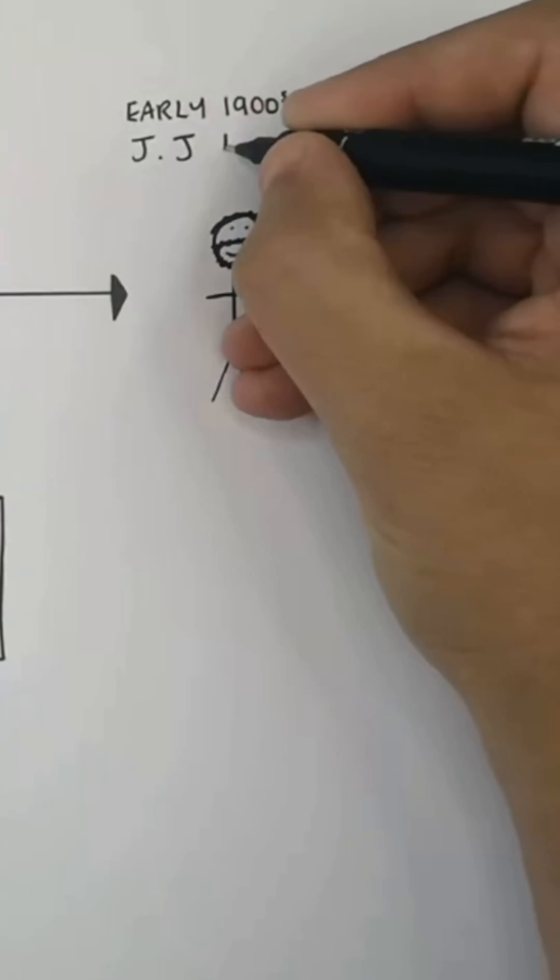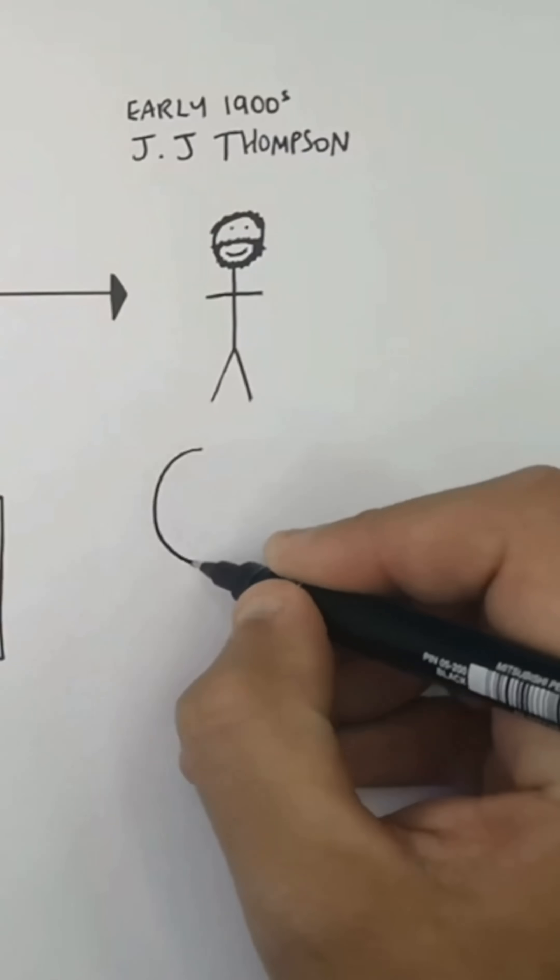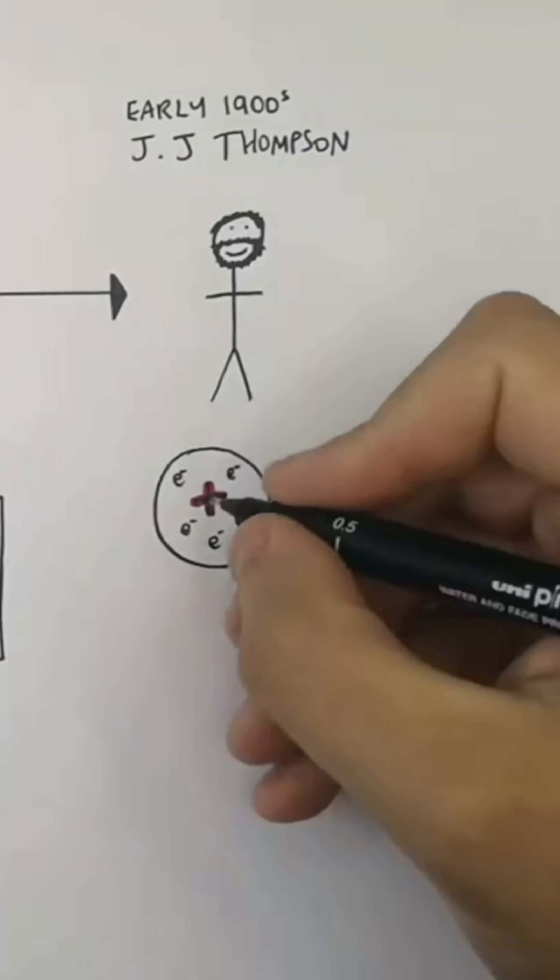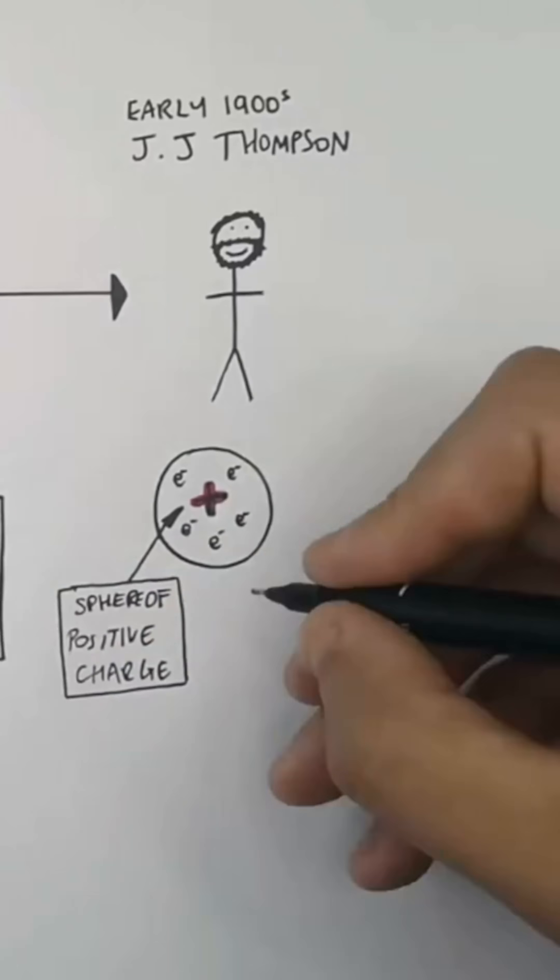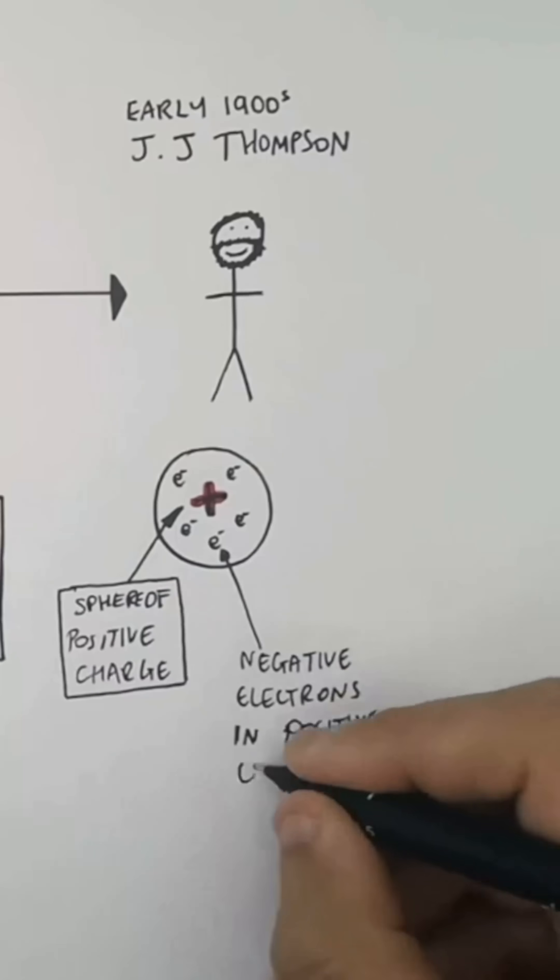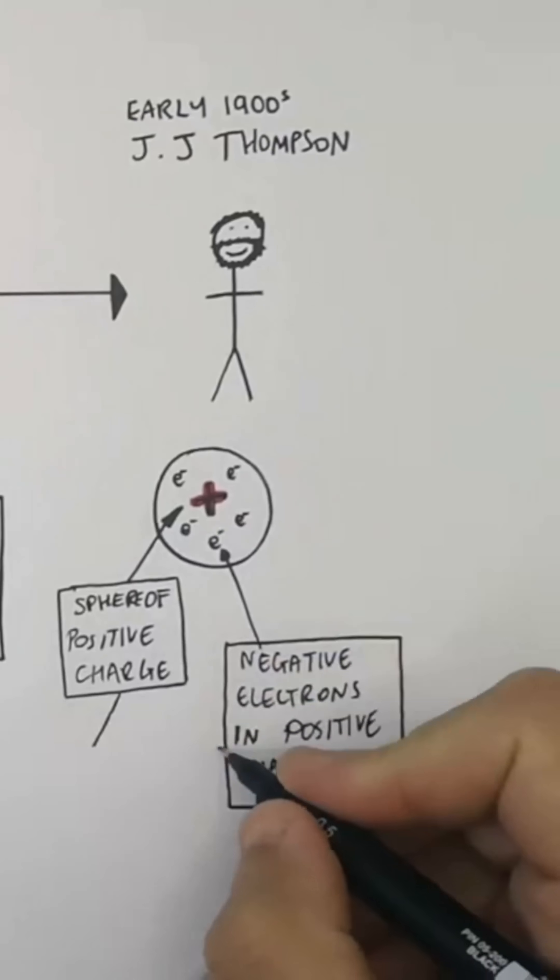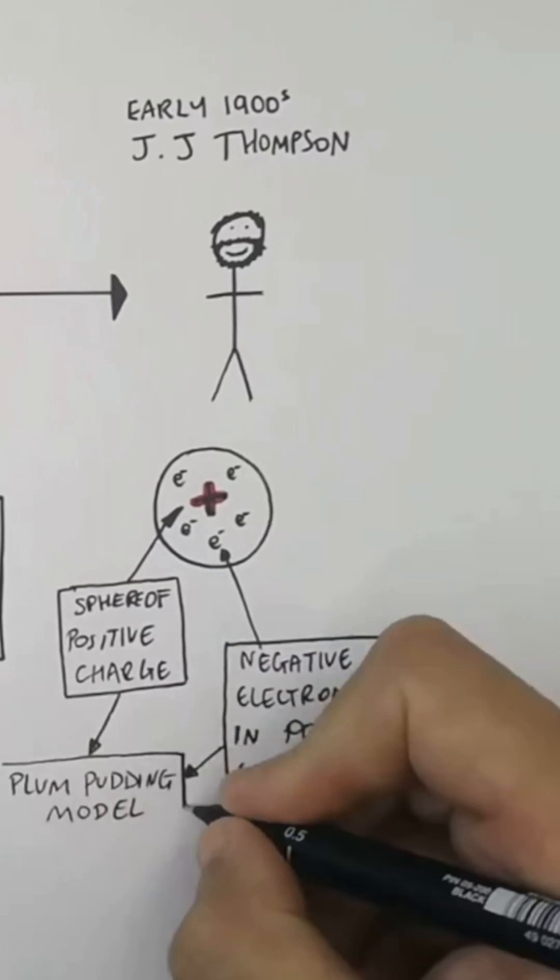And in the early 1900s, J.J. Thompson said that there was a plum pudding model, whereby there was a sphere of positive charge, and there were negative electrons in the positive charge. And he called this the plum pudding model. This is wrong.